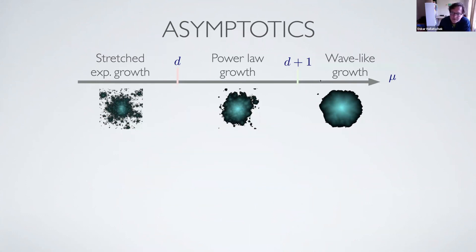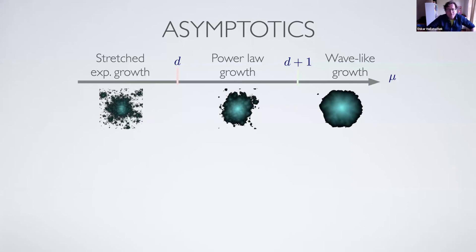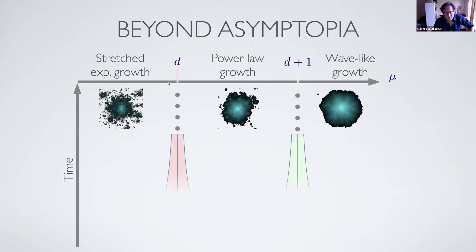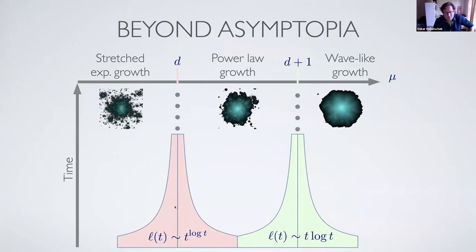A nice way to classify behaviors is assuming the kernel has a power-law shape for large distances. If mu is larger than d+1 (d being the number of dimensions), you get wave-like growth — interesting because it was previously predicted to be exponential for any power law. Between d+1 and d, you get power-law growth faster than linear; below that, stretched exponential growth. In between are interesting marginal cases which turn out to be very important beyond the asymptotics — in simulations and real life it's actually very hard to reach the true asymptotics, and these marginal cases dominate as intermediate asymptotics.